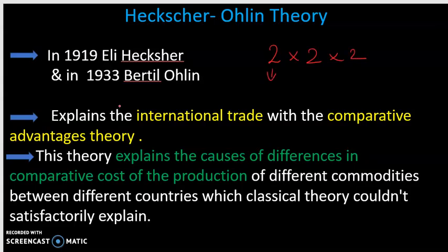The Heckscher-Ohlin model involves two countries, two factors — capital and labour — and two commodities.